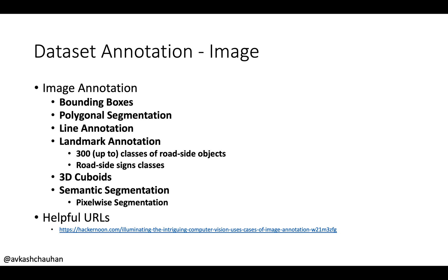For dataset annotation, mostly for image annotation, we have bounding boxes, polygonal segmentation, line annotation, and landmarks depending on roadside and various others. We also have 3D cuboids, semantic segmentation, and pixel-wise segmentation. I would suggest you search the web to learn about these in the best possible way.